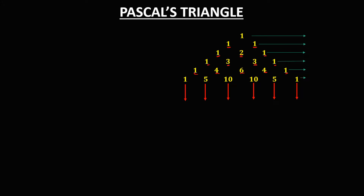So we have the quantity of A plus B to the power 0 — because everything with exponent 0 equals 1 — and this one is quantity of A plus B to the power 1, to the power 2, to the power 3, to the power 4, to the power 5, and quantity of A plus B to the power N.